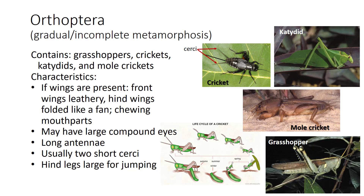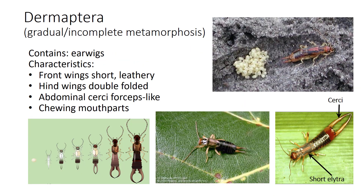Order Dermaptera, which means skin wing, contains the earwigs, which do not tunnel into the ear. These interesting creatures have short leathery front wings and double-folded hind wings. Their most striking feature is the forceps-like abdominal cerci, which are used to capture prey and defend themselves. As scavengers, earwigs feed on decaying matter with their chewing mouthparts, but also on other insects and plants, so they can become plant pests. These insects are unusual in that they show maternal care for their babies.